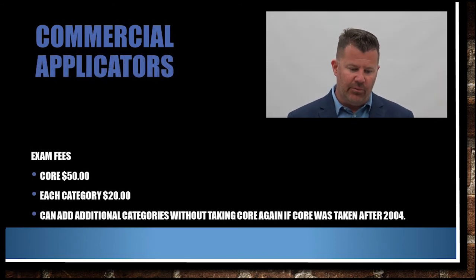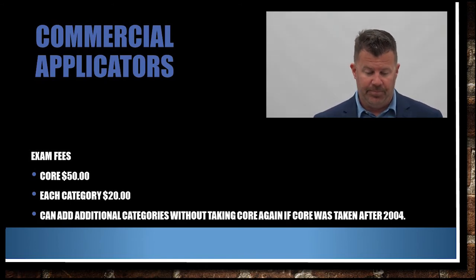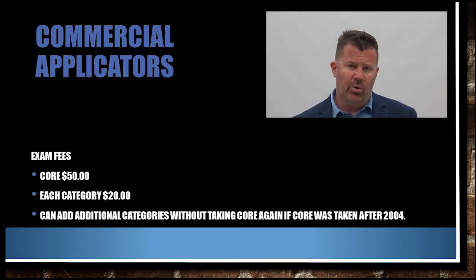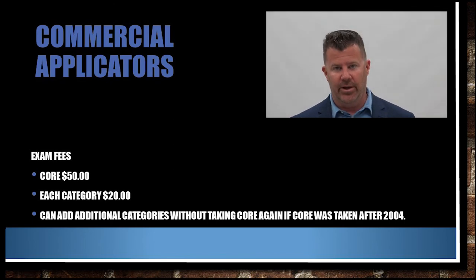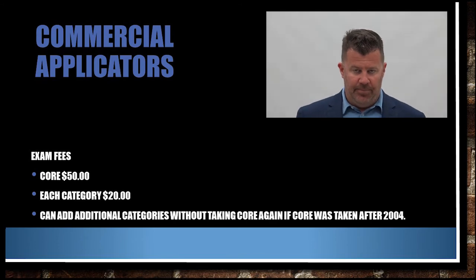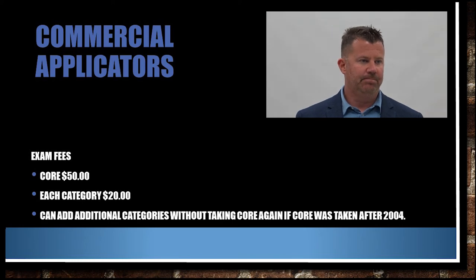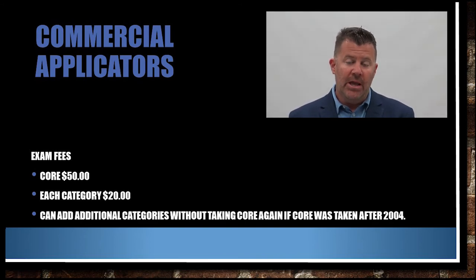Exam fees: you're going to pay $50 for the core and $20 for each additional specialty. We're going for Category L — ornamentals and turf. Think of it as lawn and landscape — 'L' is our classification and it will appear on your license. There are other categories available such as right-of-way and aquatics, but we are focused on ornamentals and turf for this class.